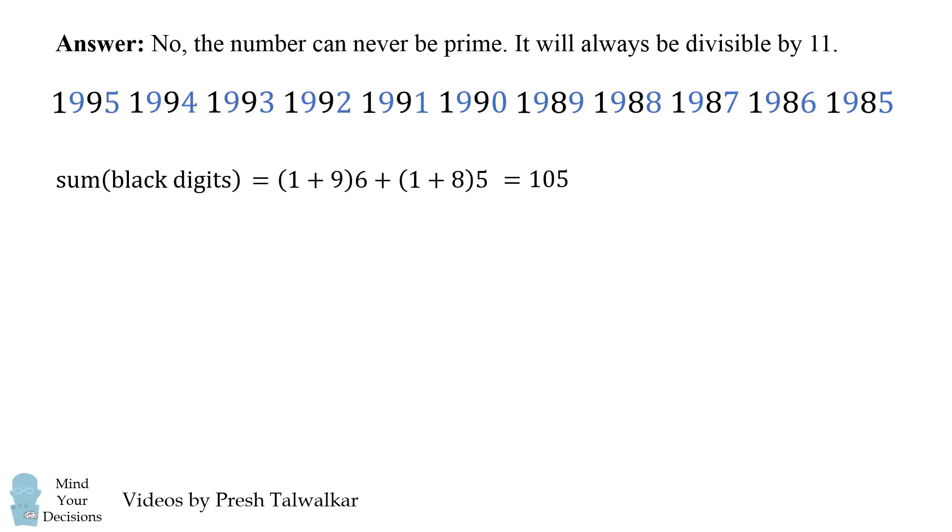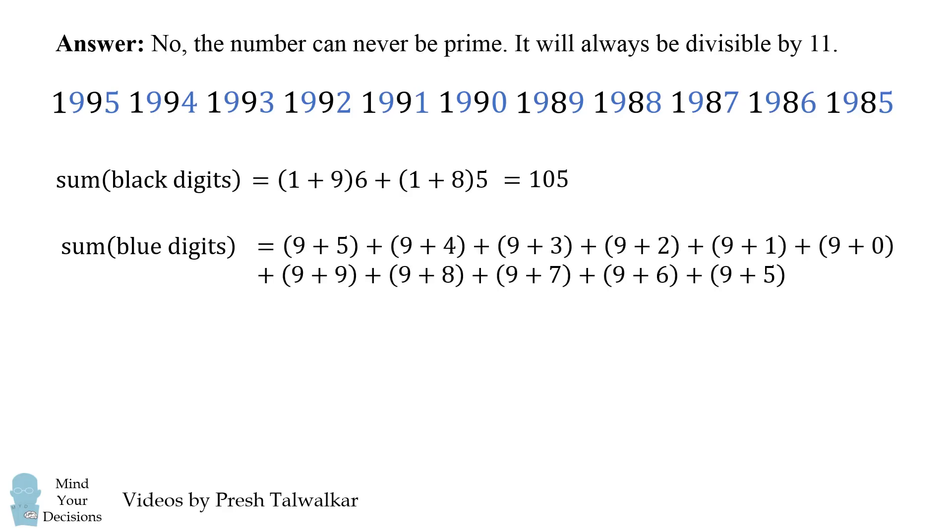Now let's calculate the sum of the blue digits, the digits in the even positions. I'll write it out in long form, and then we'll do a few calculations, and we'll simplify it, and it will equal 149.